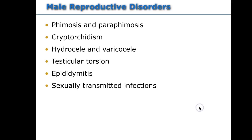Male reproductive disorders include phimosis and paraphimosis. Cryptorchidism is undescended testicles. Hydrocele and varicocele occur when the muscle in the groin area doesn't close all the way and fluid leaks into the testicular sac, causing enlargement. Hydroceles are common in infants and usually resolve by about one year, or the inguinal muscles must be surgically connected to prevent fluid movement between the abdominal cavity and the testicle.